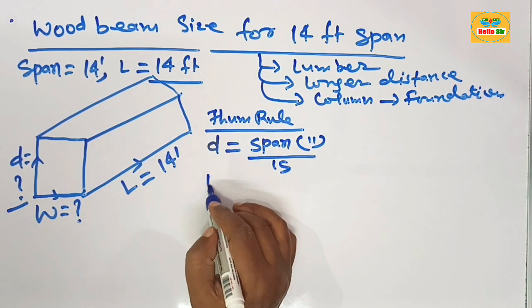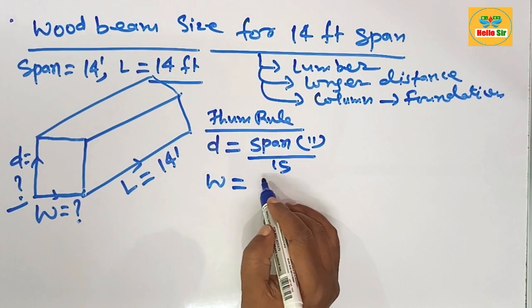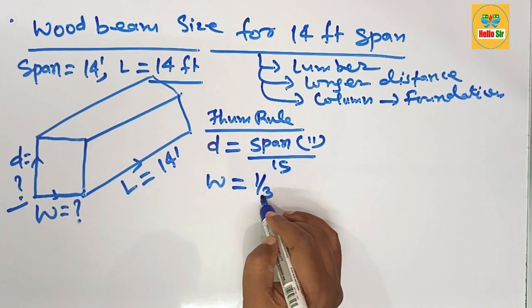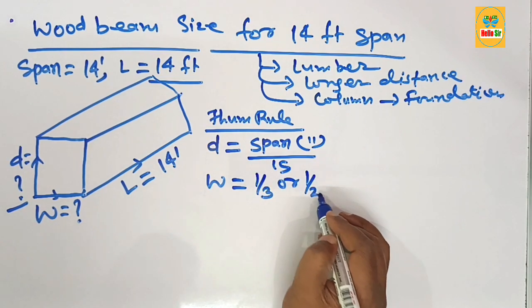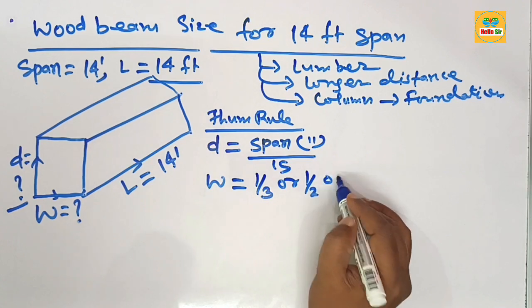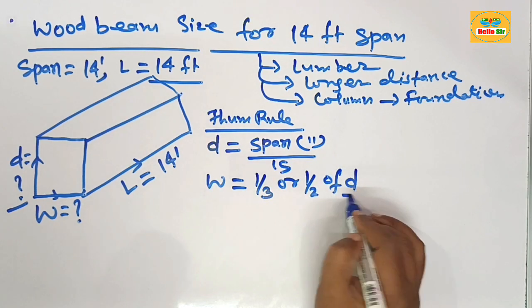As per thumb rule, the width section of the beam is equal to one-third or one-half of the depth section of the beam.